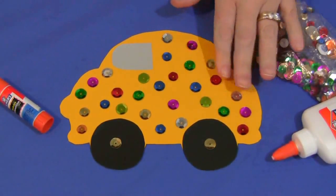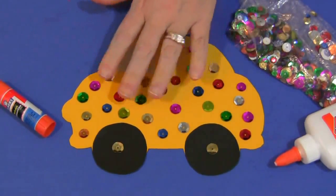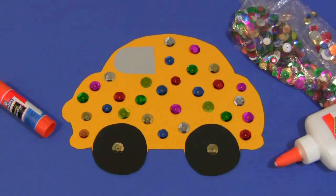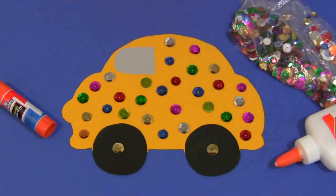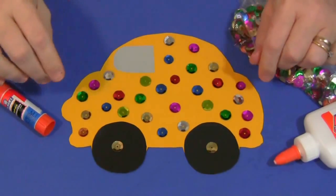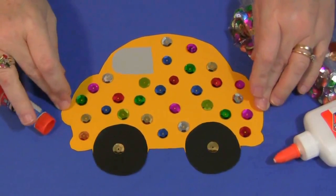On each glue drop, they press a sequin. By picking and pinching up and pressing down the sequins on the car, they get a great workout for those fine motor skills.